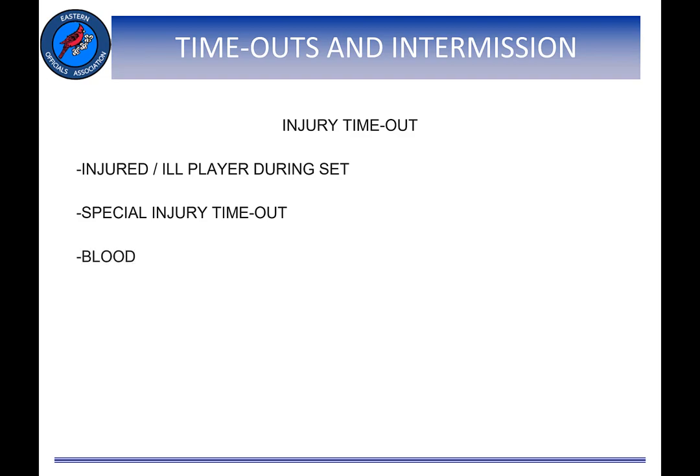An athlete who is bleeding, has an open wound, or has any amount of blood on their uniform or body shall be directed to leave the competition until the bleeding is stopped, the wound is covered, the uniform and body are appropriately cleaned with no physical appearance of blood, and/or the uniform is changed. Prior to resuming play, athletic trainers or other caregivers must ensure all contaminated surfaces and equipment are cleaned with a disinfectant, using approved CDC as well as state and local health department guidelines.